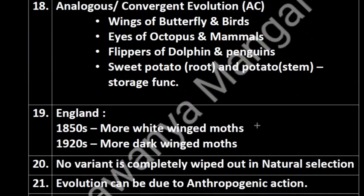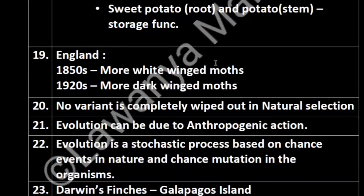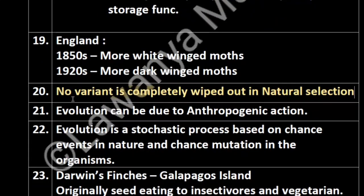Now let's talk about moths and industrialization. In England in the 1850s, more white-winged moths were present. But due to industrialization and pollution, sulfur dioxide made lichens sensitive and carbon soot deposited on trees, so more dark-winged moths became present. This is an important point about natural selection: no variant is completely wiped out. Natural selection does not eliminate variants completely — they persist.